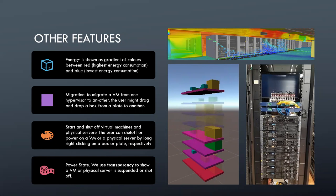Energy is shown as a gradient of colors between red, which signifies the highest energy consumption, and blue, which signifies the lowest energy consumption. As you can see here, the colors go from red, then to purple, with red being the highest energy consumption, purple less than that, then pinkish, and then blue, which signifies the lowest energy consumption.